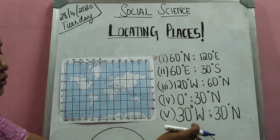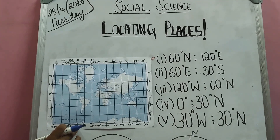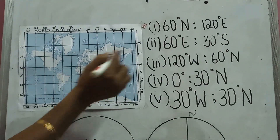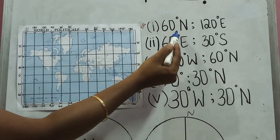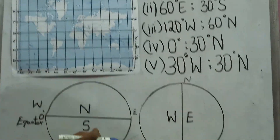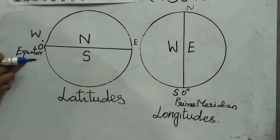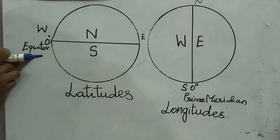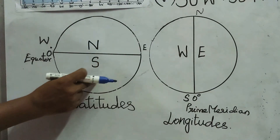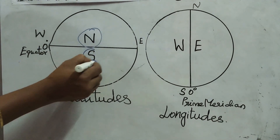Here I have given some coordinates to locate on the world map. Before we start locating, we should know which is latitude and which is longitude in these coordinates. Here I have drawn two pictures. This zero degree equator is an important latitude which divides the earth into two hemispheres — the northern hemisphere and southern hemisphere.